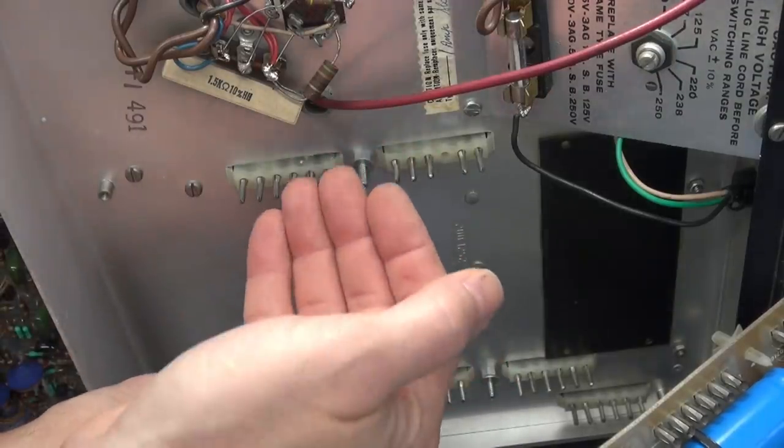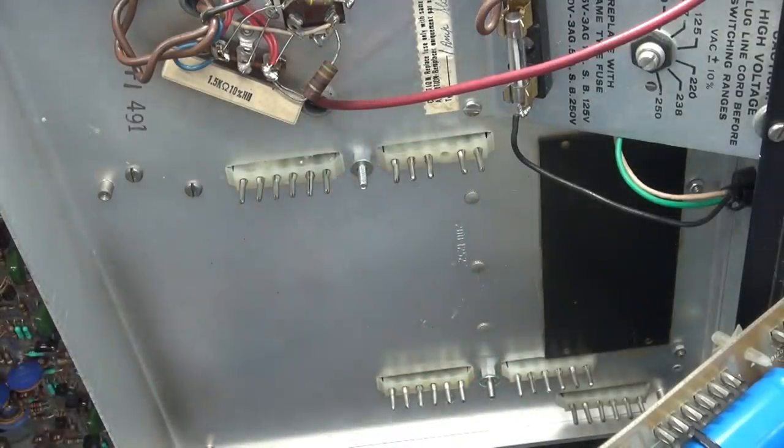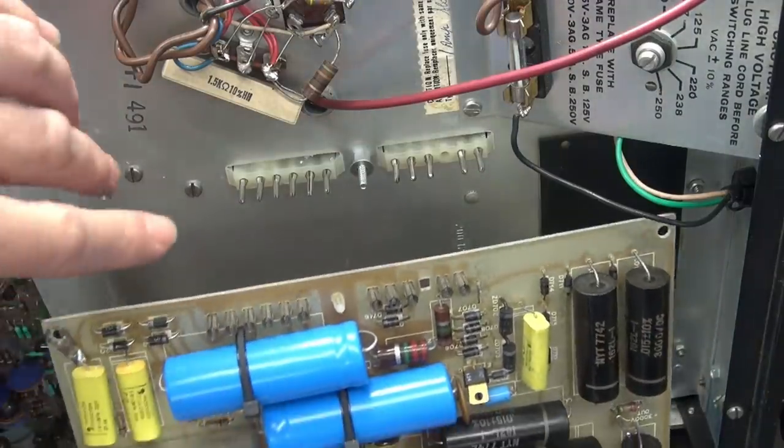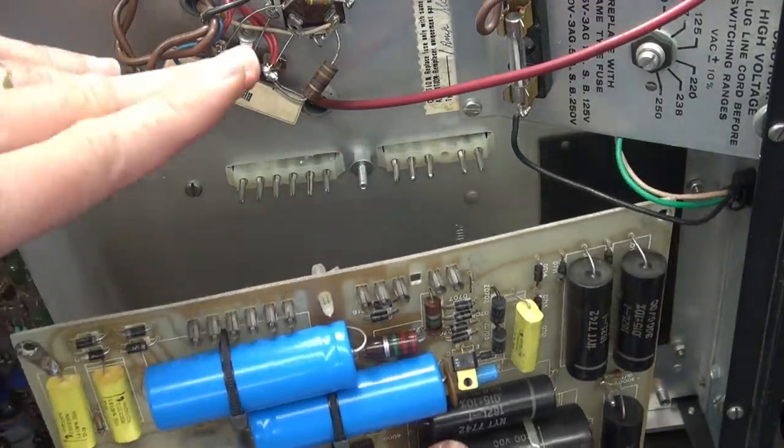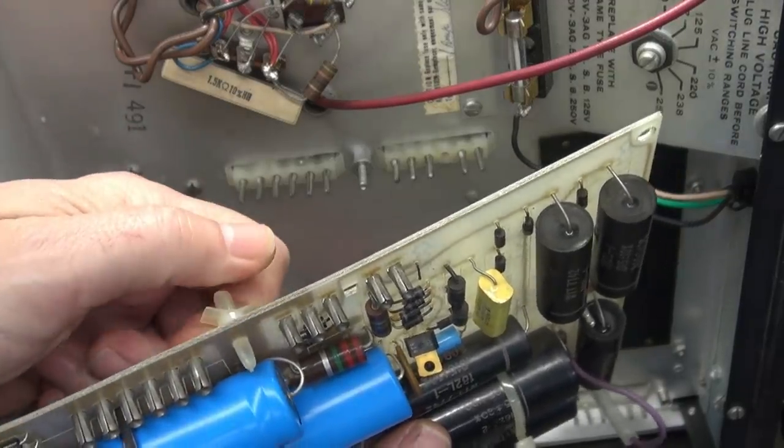Alright there's the spacers installed with a little washer to pretty much line it right up with the nylon. Okay we don't want it too far back because I don't want to break these connectors. They're old and brittle. So now I'll get the board in place and get the nuts on there. But hey guess what I gotta take these nylon things off first don't I? So let me get those out of the way.